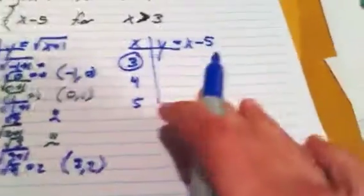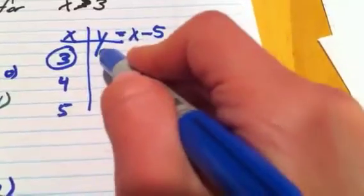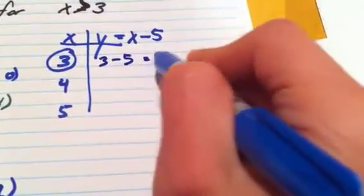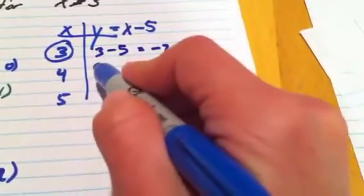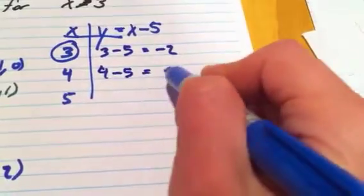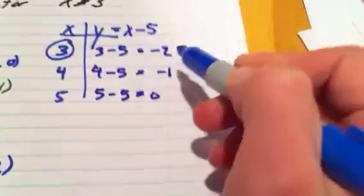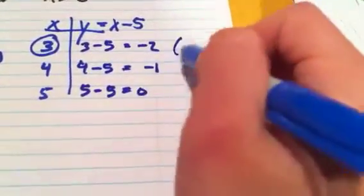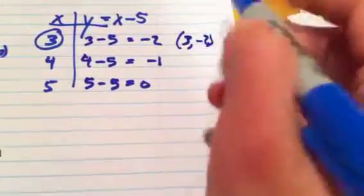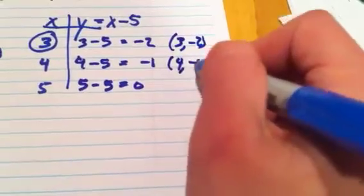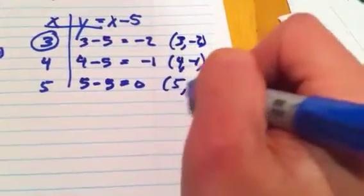Cool. Coming over here, let's plug it in. Plugging in a 3, 3 minus 5 is minus 2, 4 minus 5 is minus 1, 5 minus 5 is 0. That's giving me the points 3, negative 2, 4, negative 1, 5, and 0.